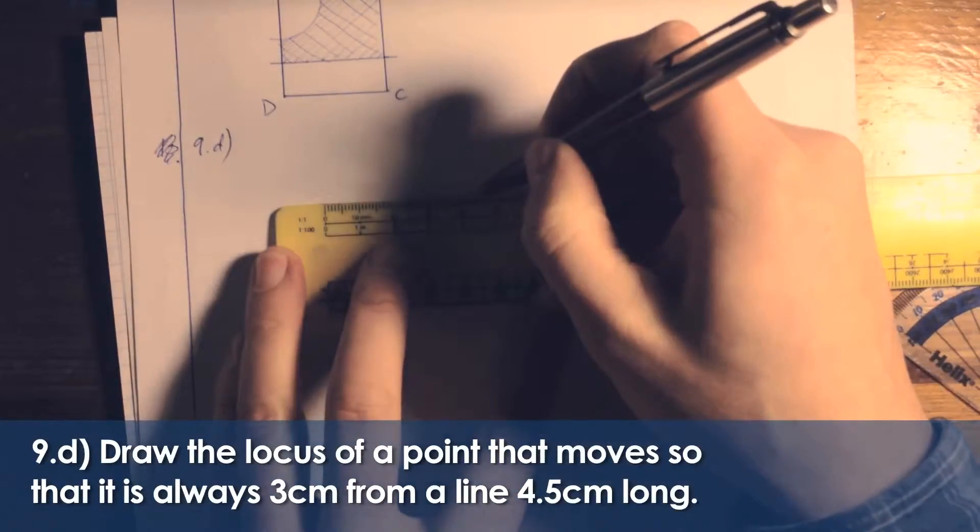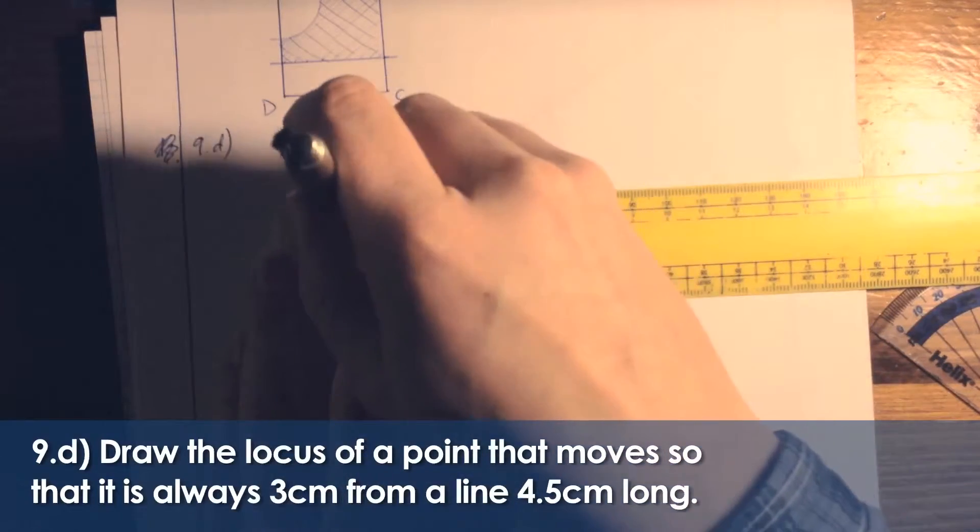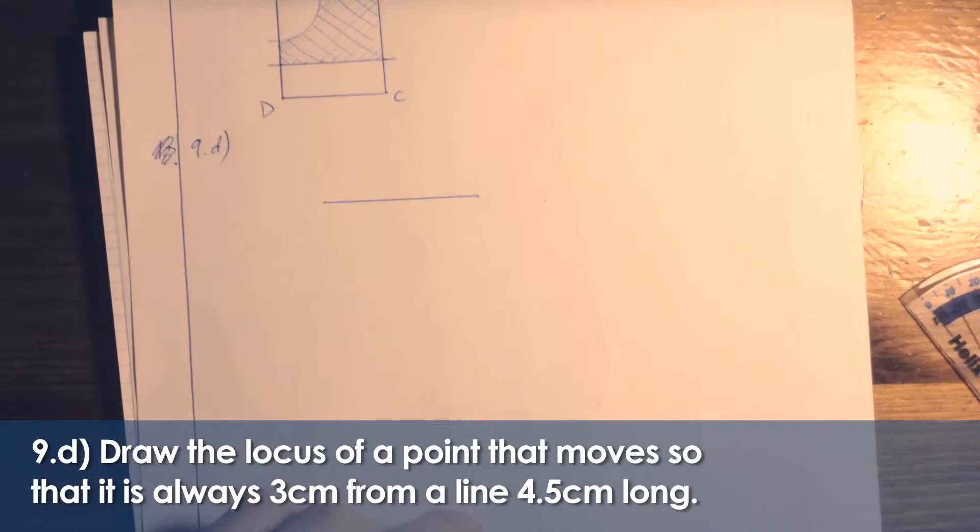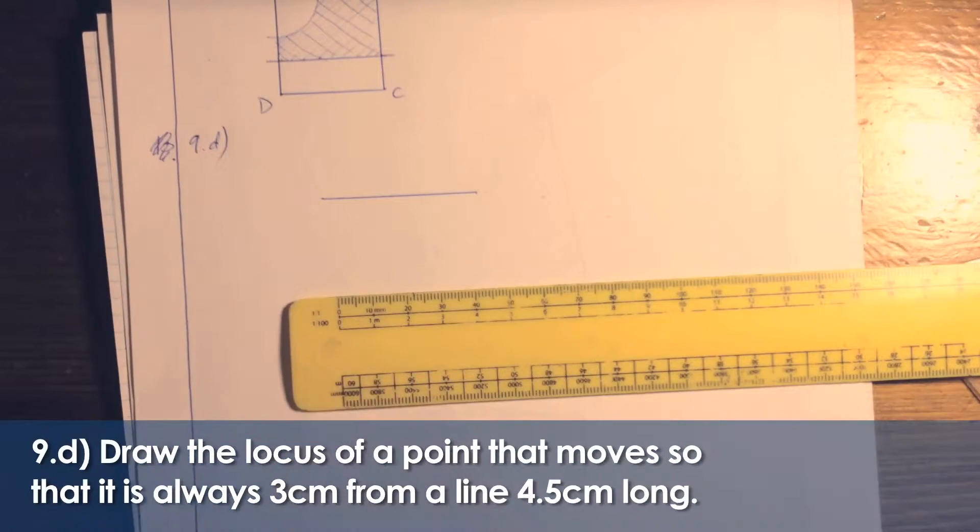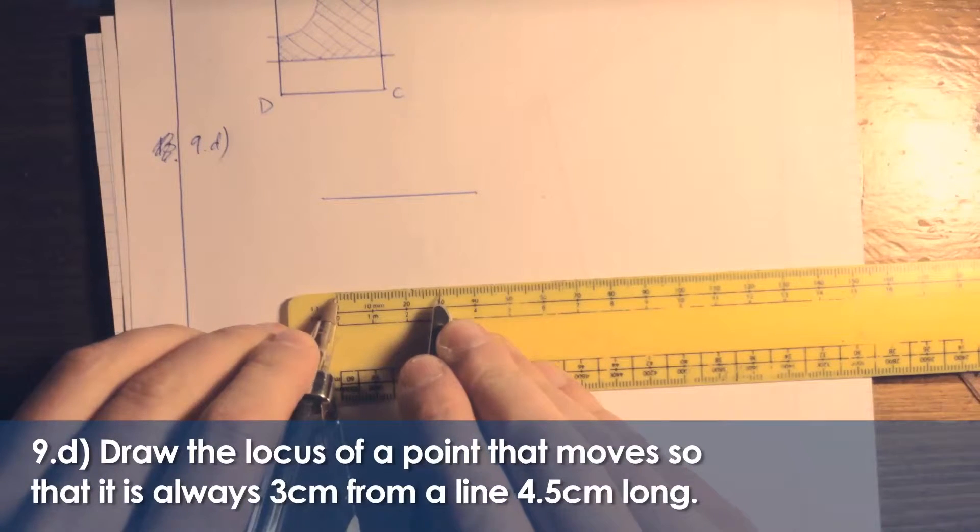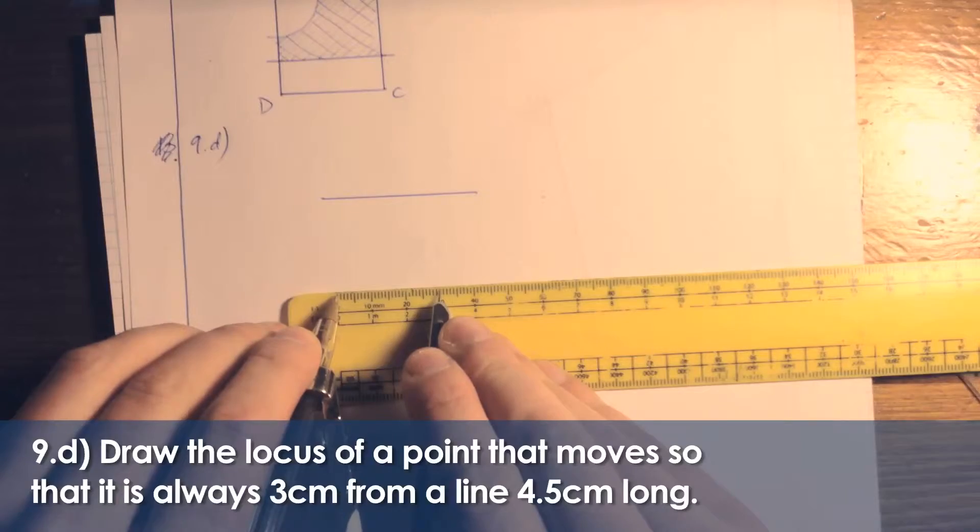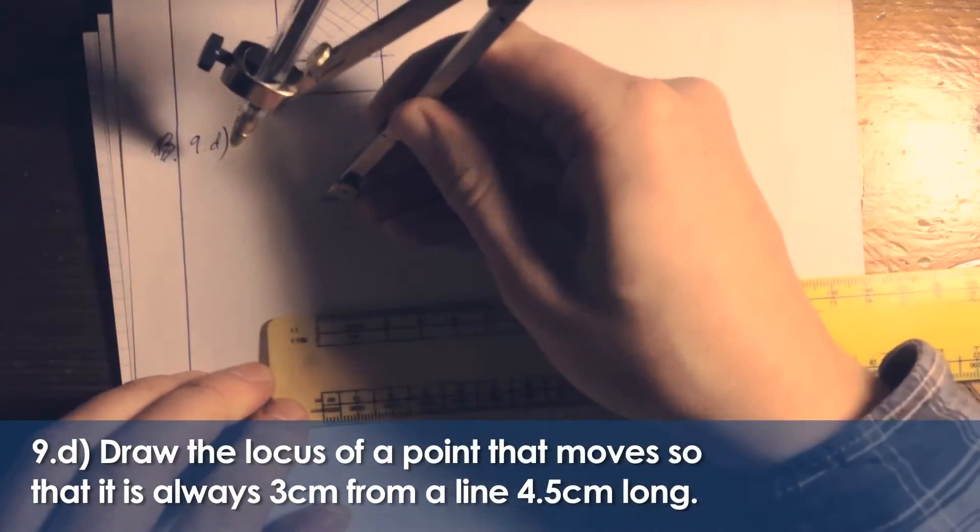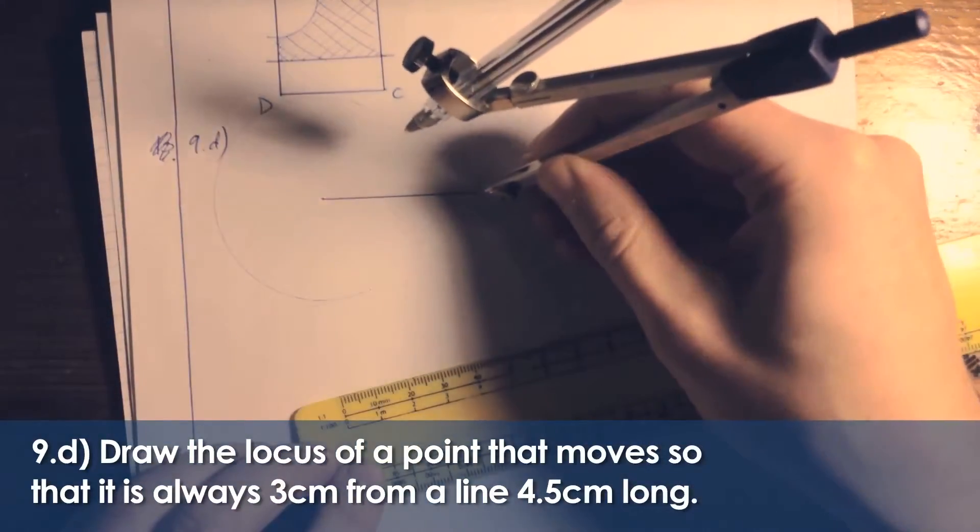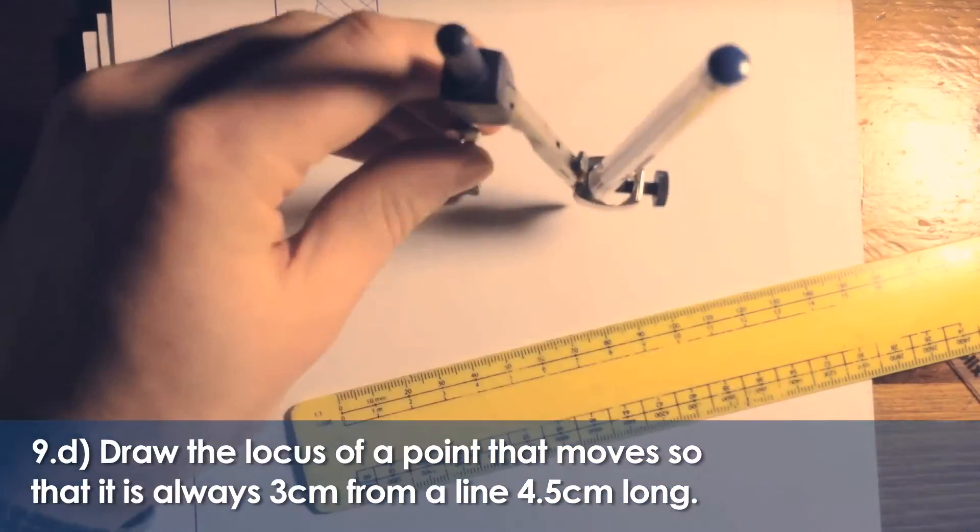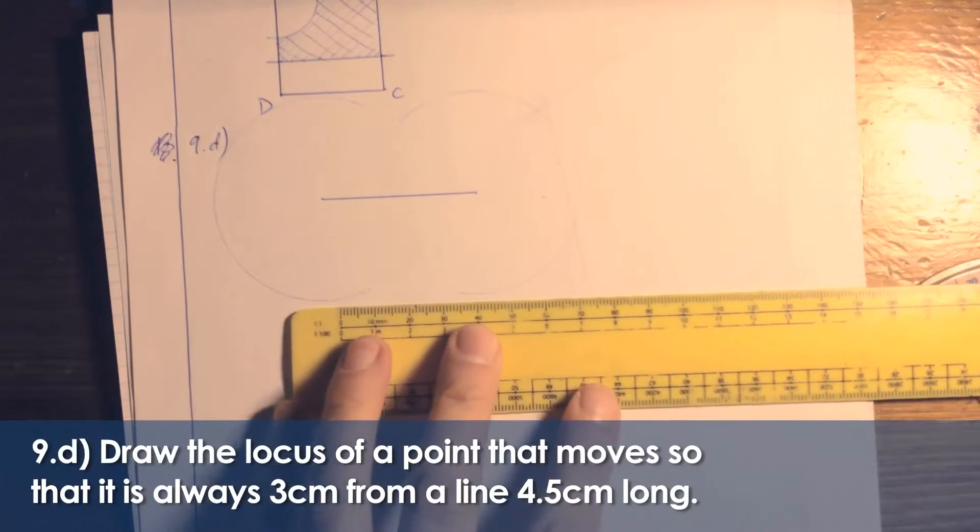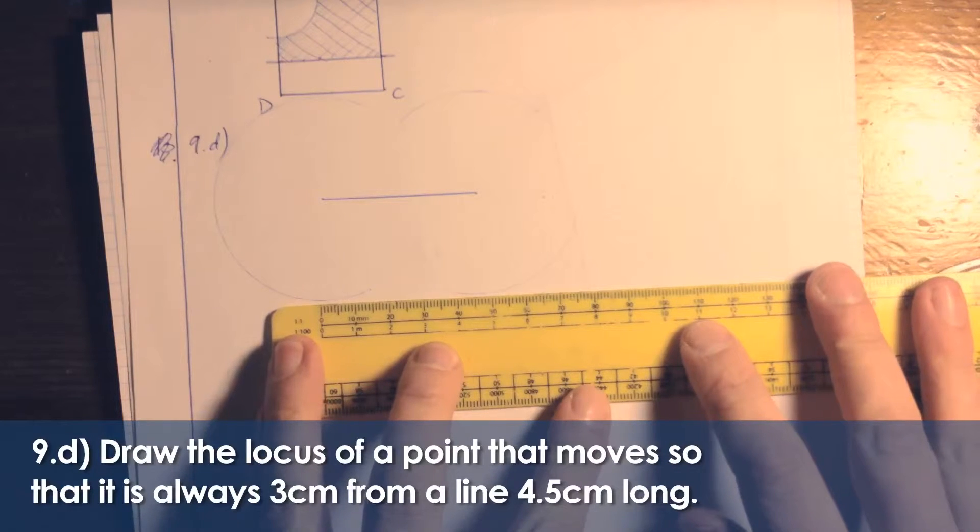Here's my line, 4.5 cm long. It's always 3 cm from that line, so I'm going to draw, first of all, some 3 cm arcs at the end of the lines, because I know it's going to be an oval running track type shape when it's a locus of points from a straight line. So I'm going to draw that there, and similar from this end.